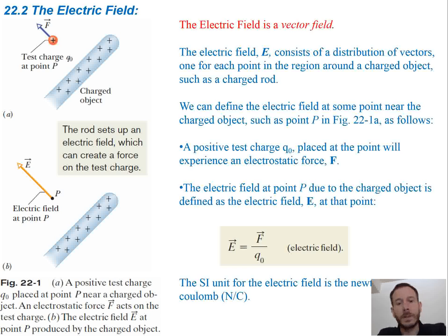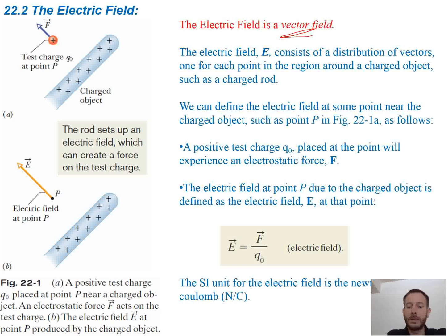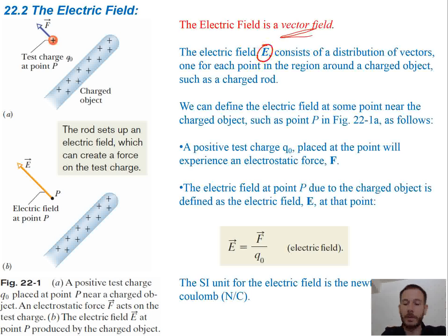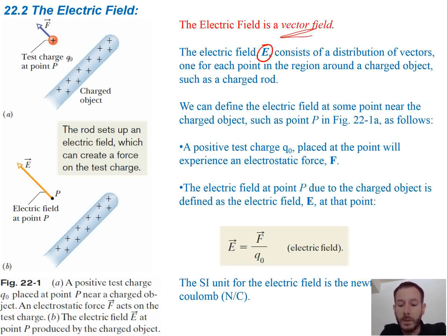Electric field is a vector field. Electric field E, which we're going to denote as E, so E is our variable for electric field, consists of a distribution of vectors, one for each point in the region around a charged object, such as a charged rod.